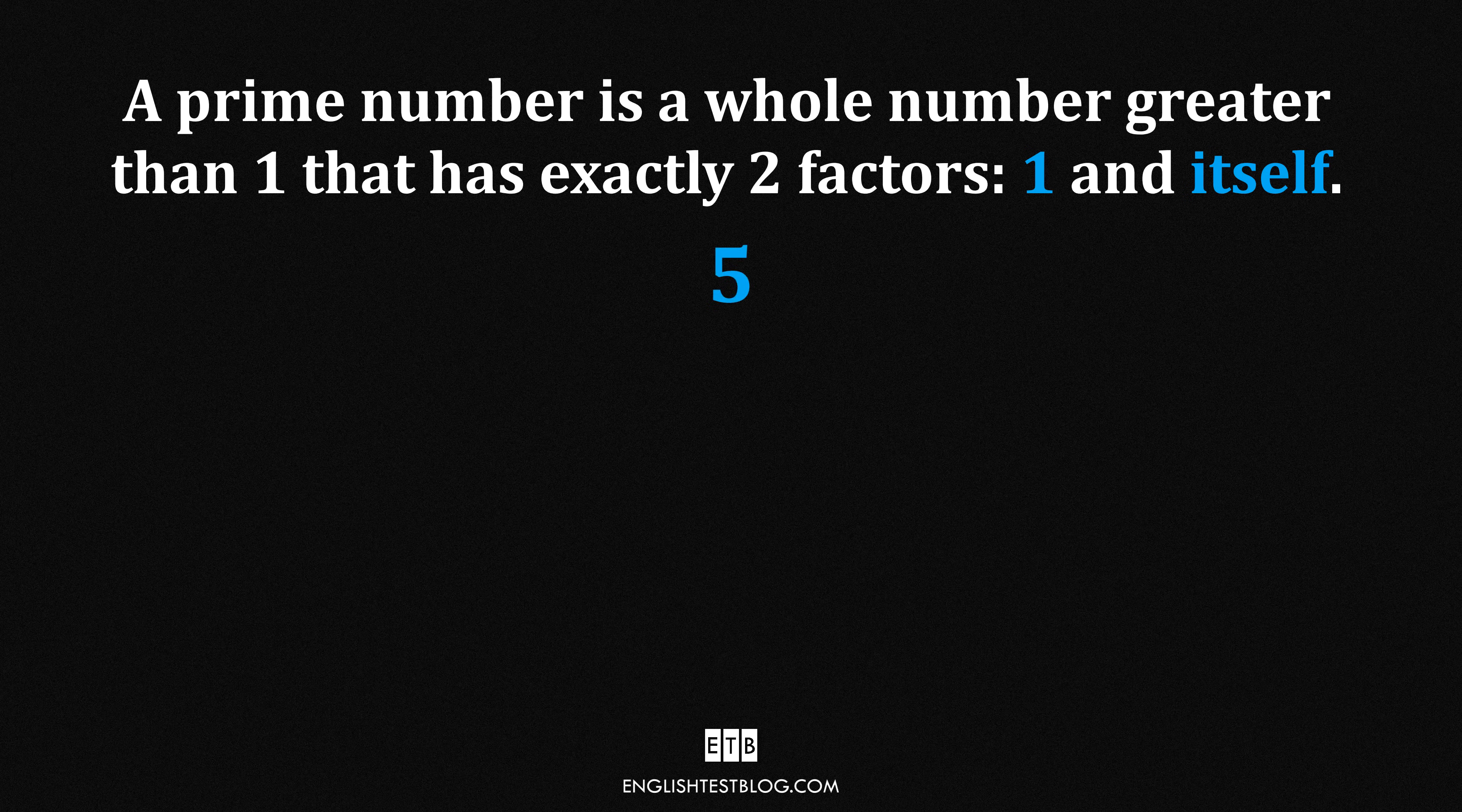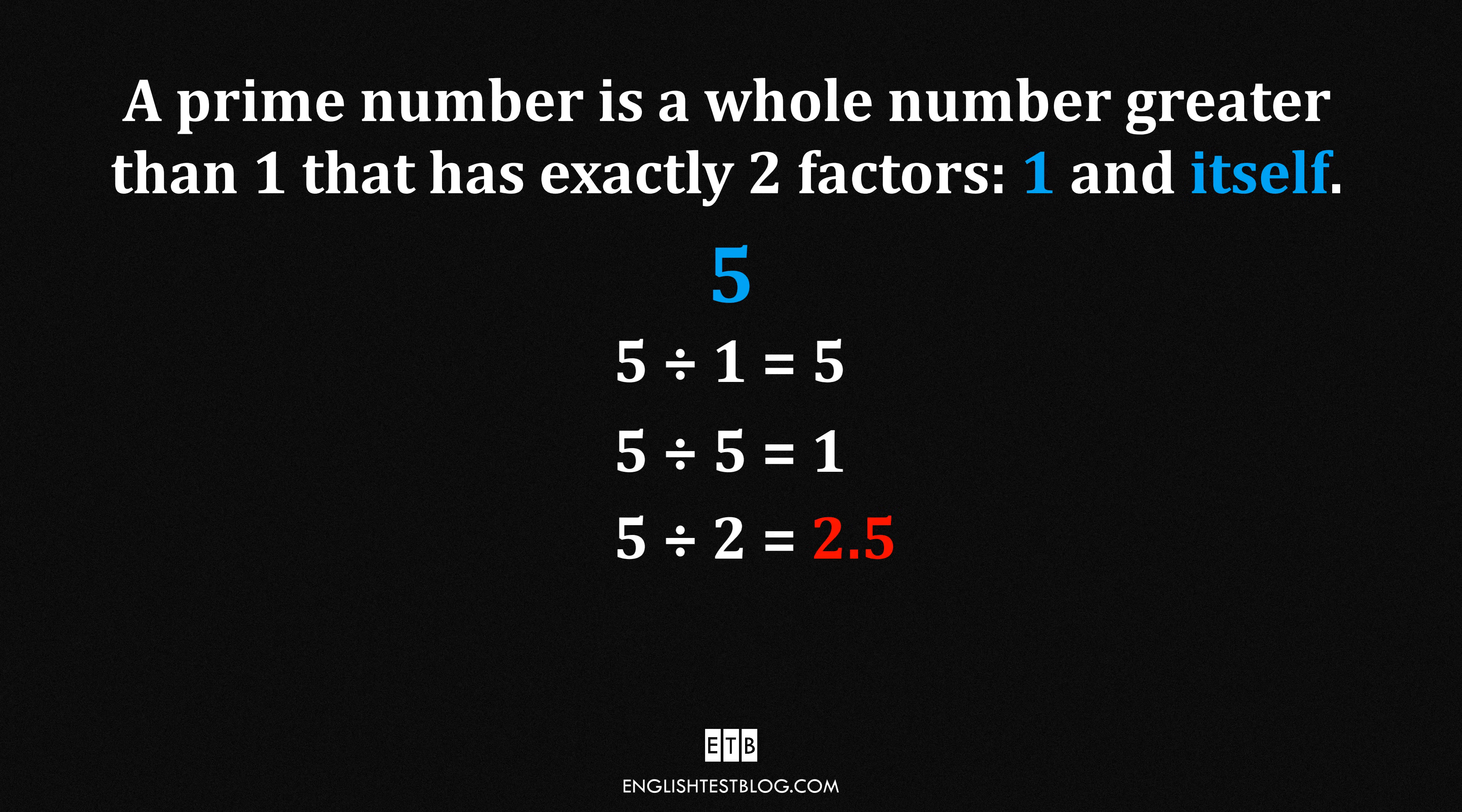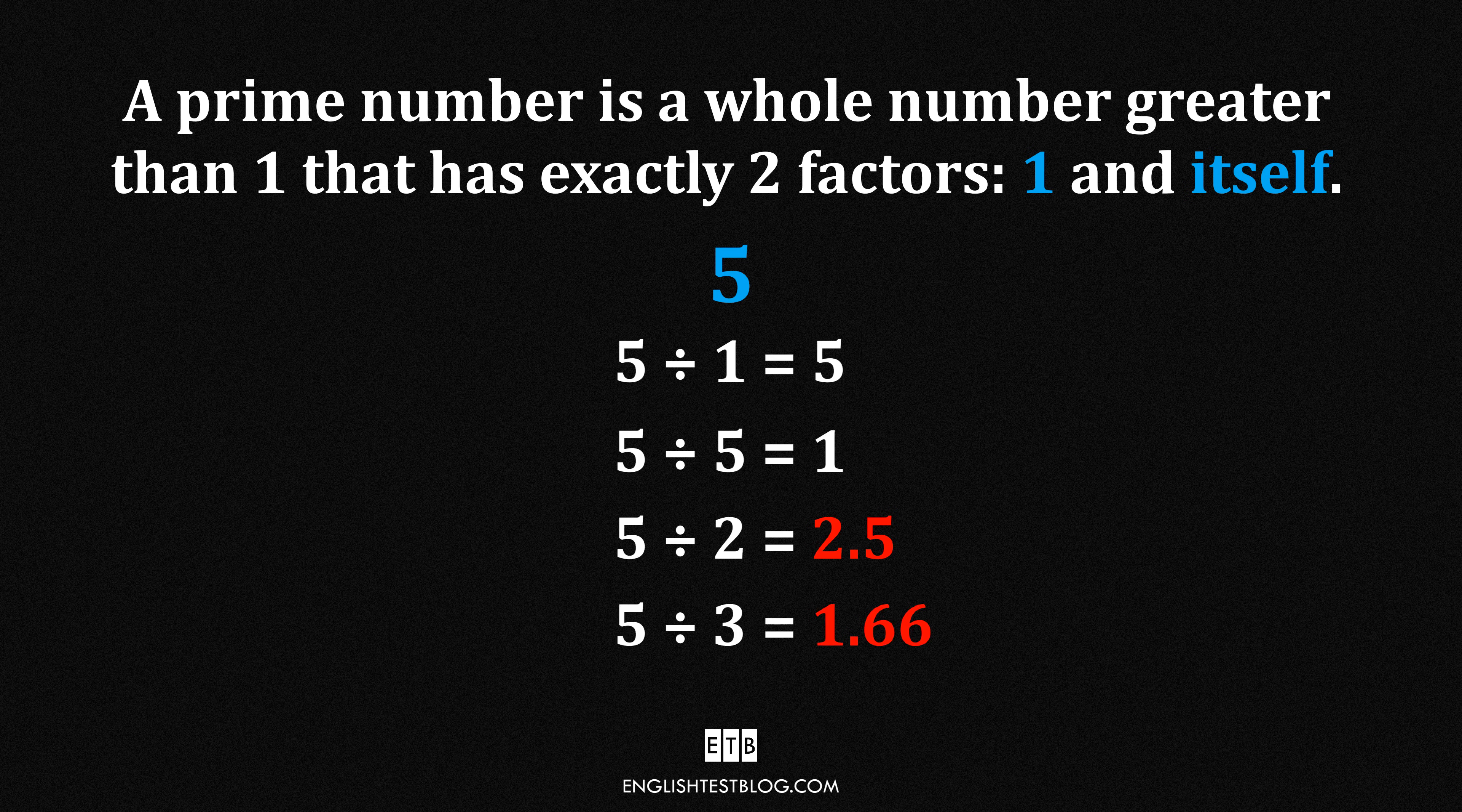Now, how about 5? 5 divided by 1 equals 5. 5 divided by 5 equals 1. What about 2? 2.5. Nope. 3? 1.66. Nope. 4? Still no whole number. Only 1 and 5 work. Two factors. Prime!